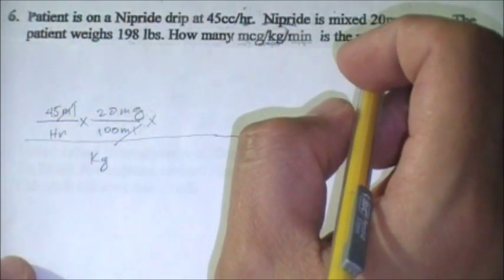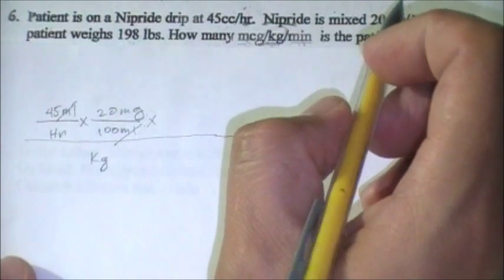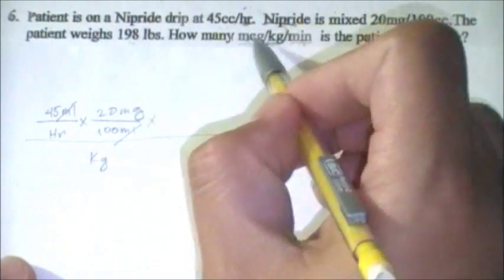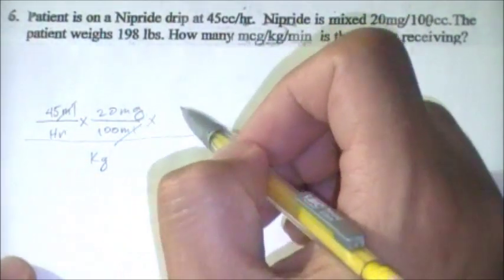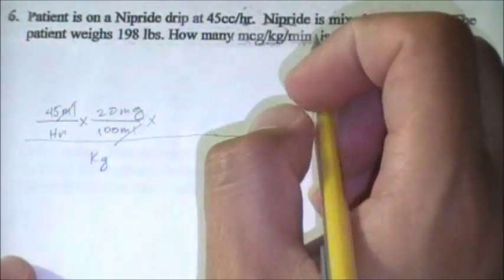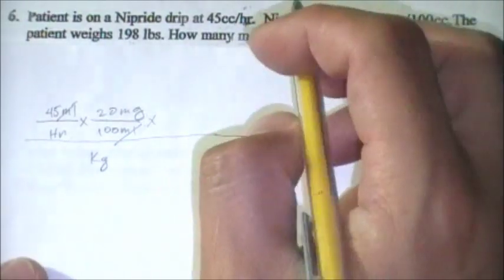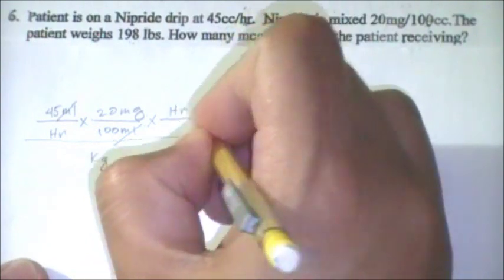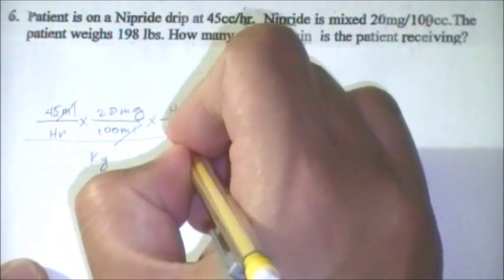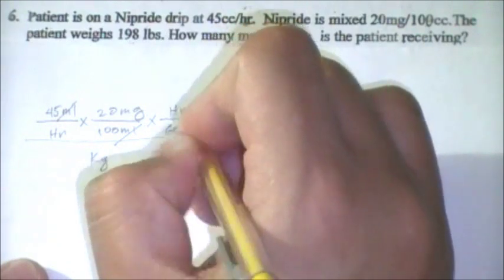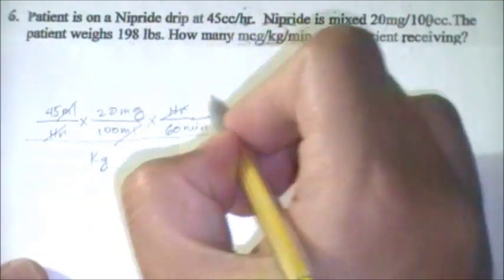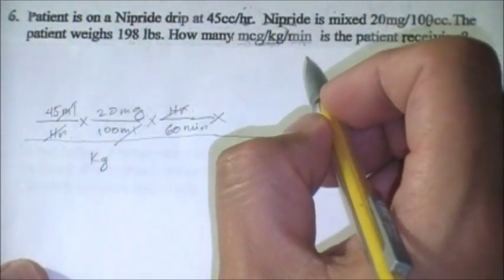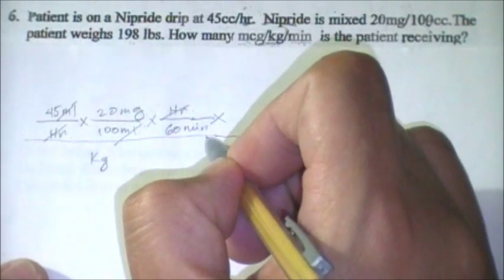Now it's up to us which to solve first — we could convert hours to minutes or convert milligrams to micrograms. In this lesson we'll go ahead and convert hours first. So one hour equals 60 minutes. Let's cancel the hours, and now minutes is one of our known units.